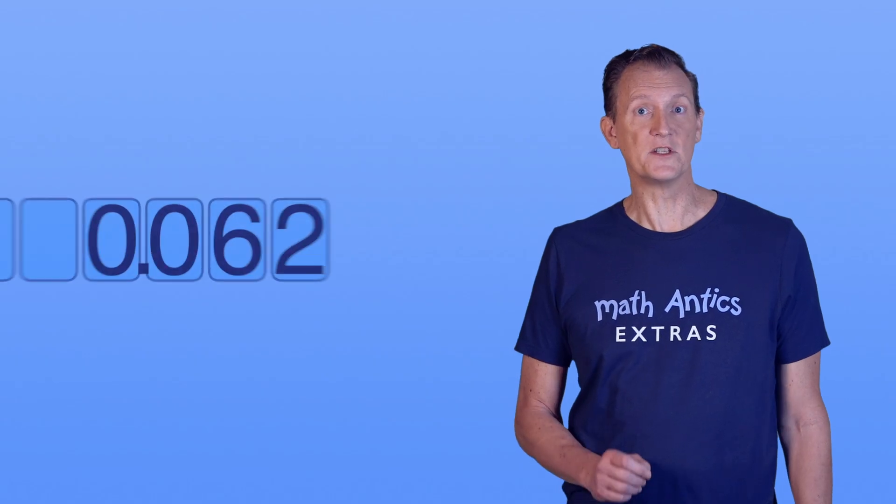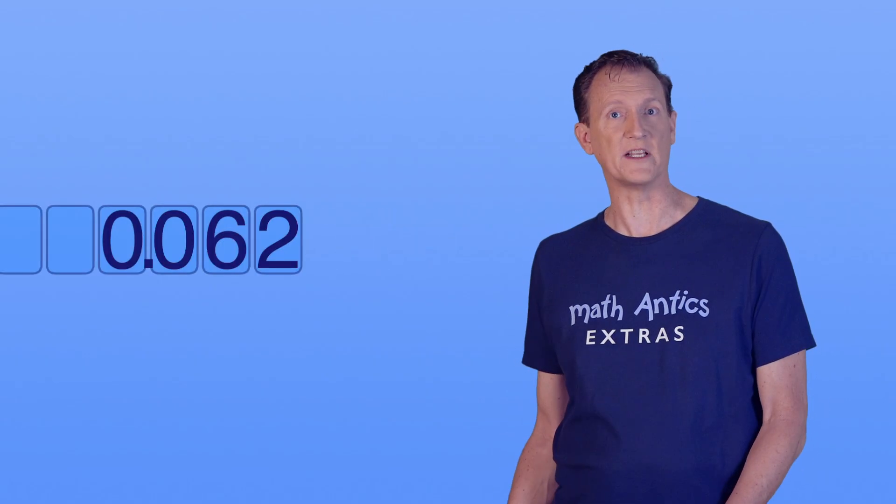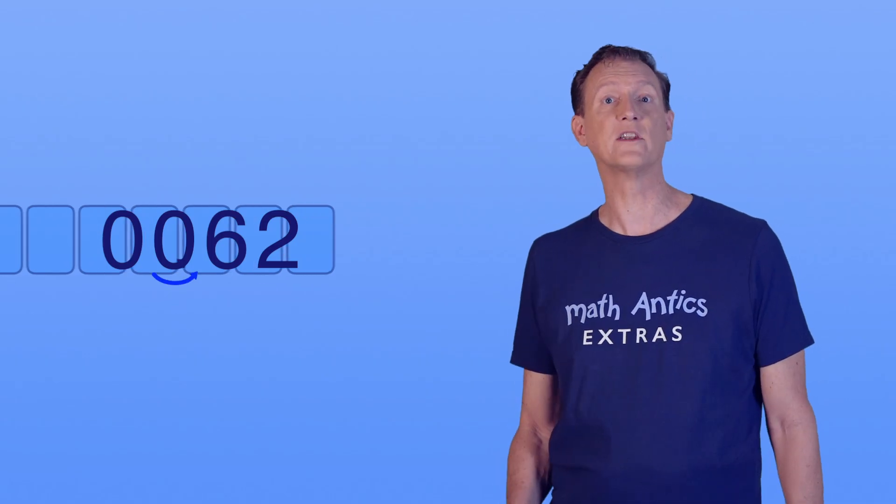Let's try that with the number 0.062. Instead of sticking three zeros to the right, we shift the number places three places to the right. One, two, three.